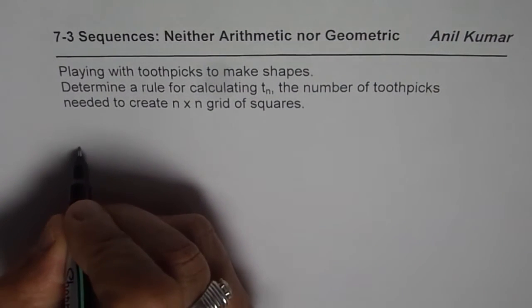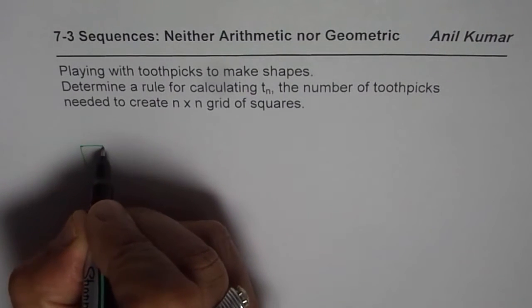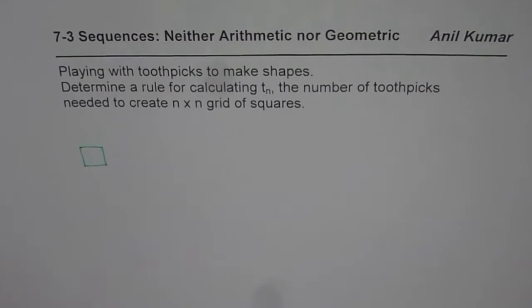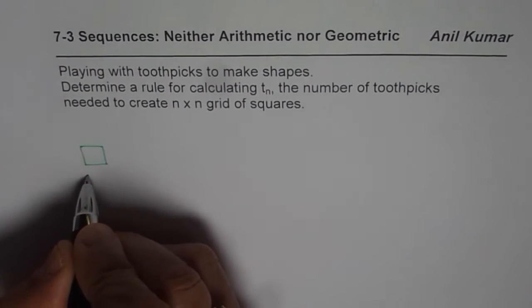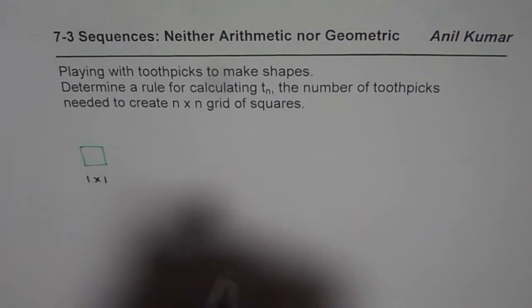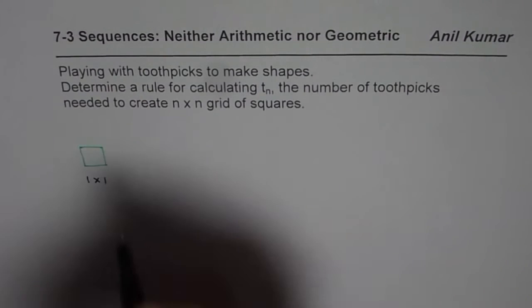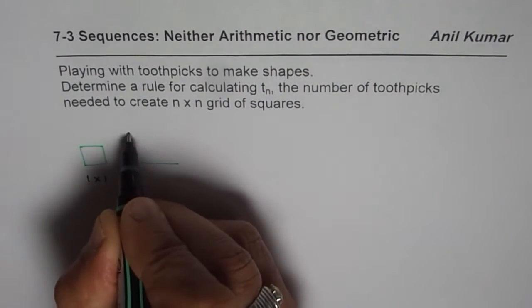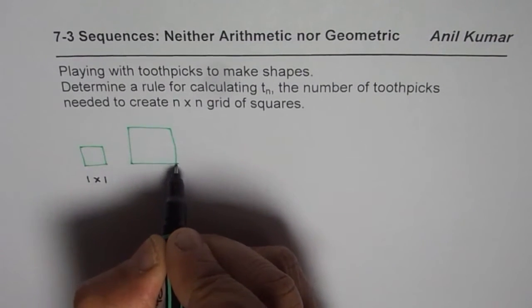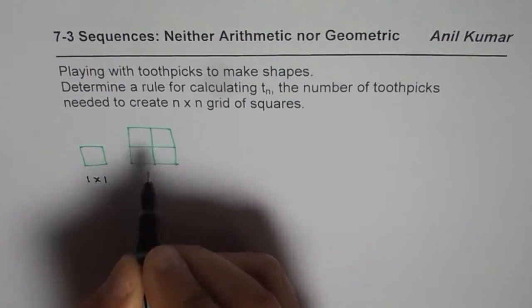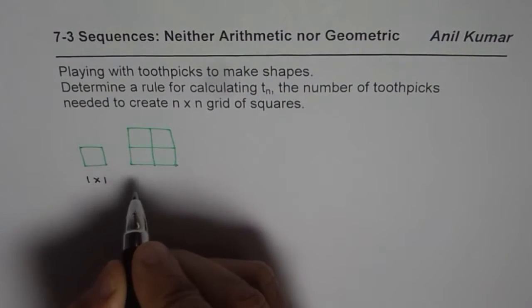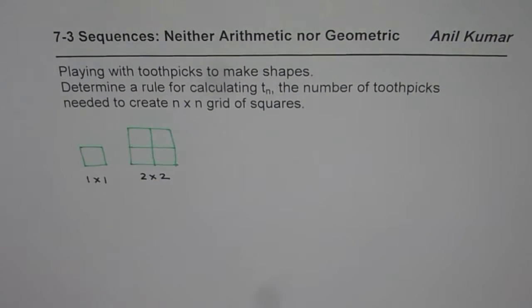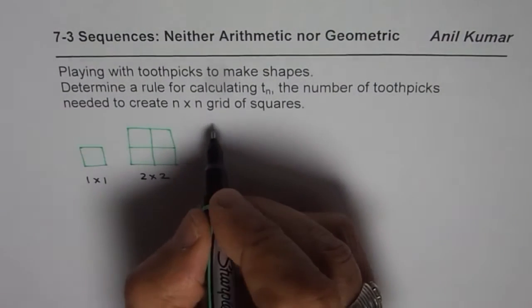The question here is determine a rule for calculating Tn, the number of toothpicks needed to create n by n grid of squares. This is my one by one grid, and two by two will be that each unit is two units long. Imagine they are equal squares. This is my two by two grid, and likewise we can make many grids like this.